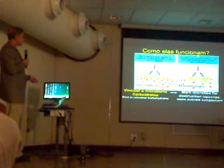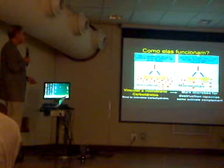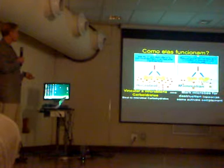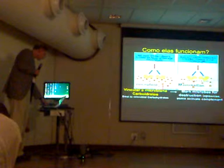When a collectin binds to a microbe, it marks the microbe for destruction. It does this first by opsonizing it — which I'll explain in a moment — and some collectins can also activate and recruit the complement system.